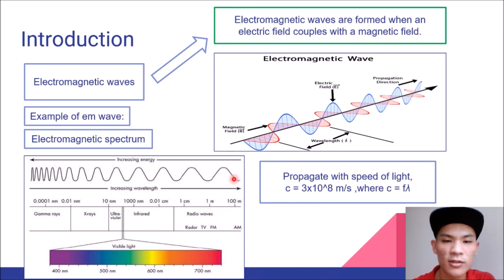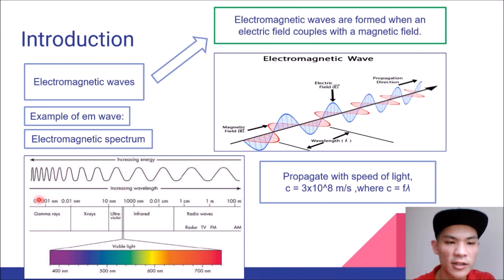Since frequency is inversely proportional to wavelength, if the frequency is increasing in one direction, then the wavelength is increasing in the other direction.